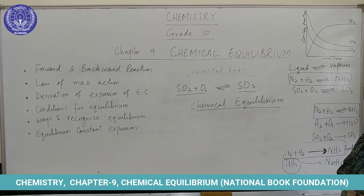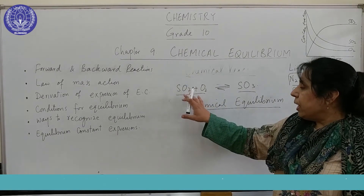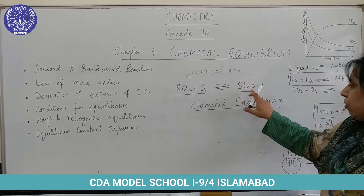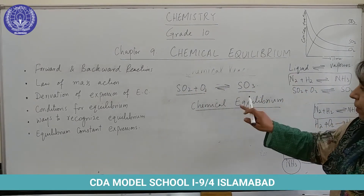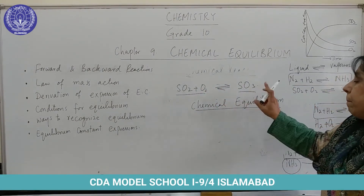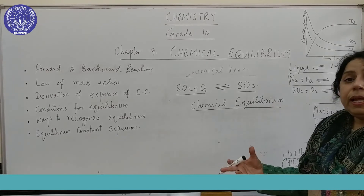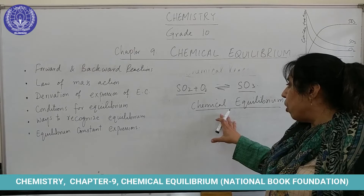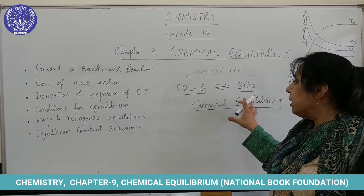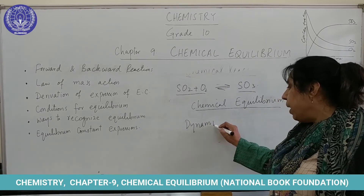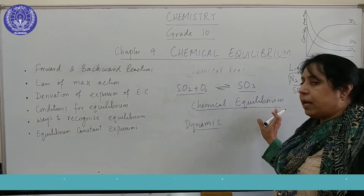This point is called chemical equilibrium, and this is a type of dynamic equilibrium. Because actually the reaction is still taking place — sulfur dioxide and oxygen is converting into SO₃, and at the same rate SO₃ is converting back into SO₂ and O₂. But apparently it appears that the reaction is not taking place and has stopped. Actually the reaction is taking place, and this is a type of dynamic equilibrium called chemical equilibrium.